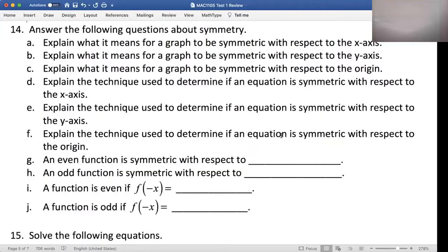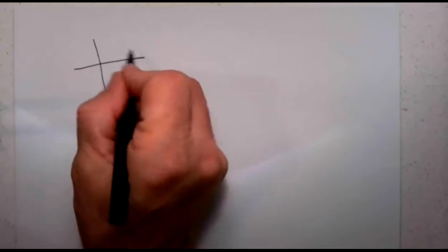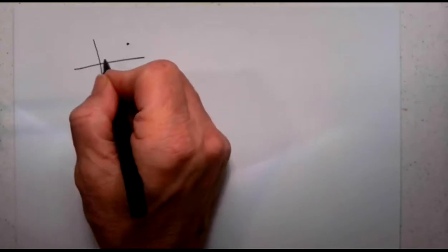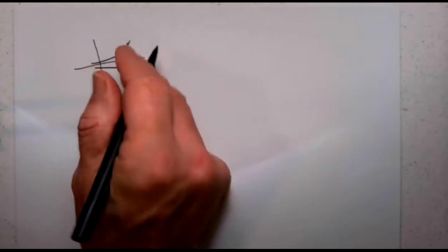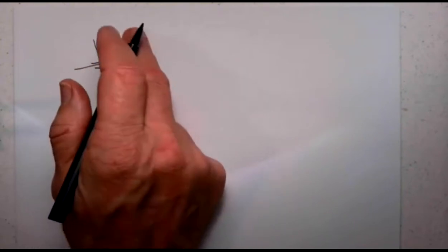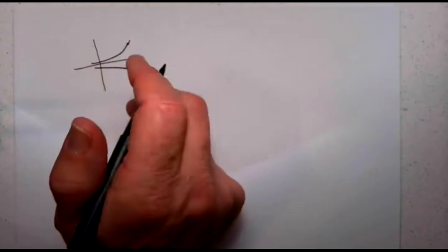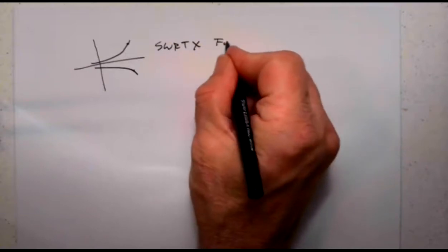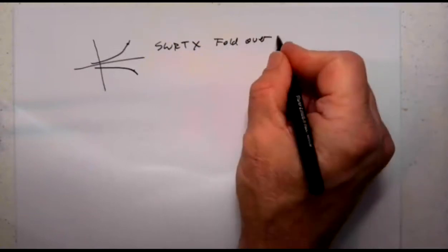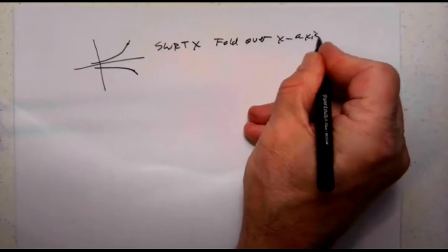The first question asks: explain what it means for a graph to be symmetric with respect to the x-axis. If I have a point up here, it has to have a mirror image down there. If you would take your points and fold them over the x-axis, they would match. That's what symmetric with respect to the x-axis means — fold over x-axis, points match.